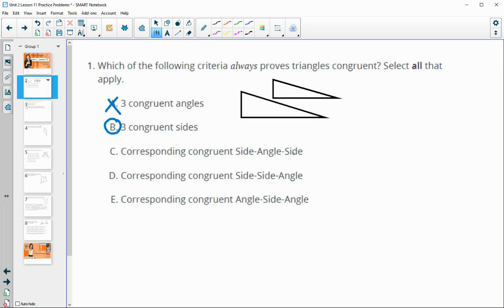Corresponding congruent side angle side. So this has the angle between the two sides. That is true. Corresponding congruent side, side, angle. When the angle is not between the two sides, that does not guarantee that the triangles are the same size. This one actually produces an ambiguous case where there could be two different triangles with the measurements given. And then E says corresponding congruent angle side angle. And that is true if we know two angles and the side in between.